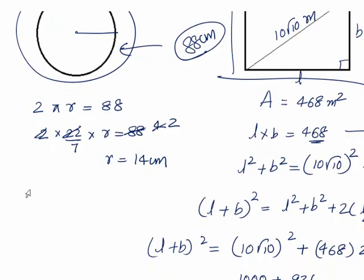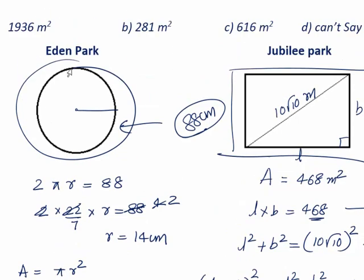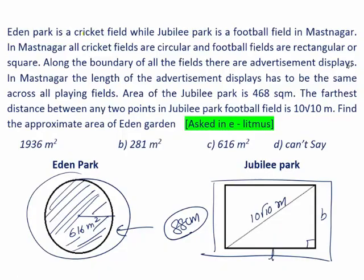Now area can be found like pi R square, pi means 22 by 7 into 14 into 14, which makes 616 meter square. So finally we can say the area of this Eden Park is 616 meter square. If you look at the options, option C is the correct answer. Thank you very much for watching this video.